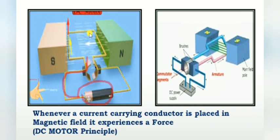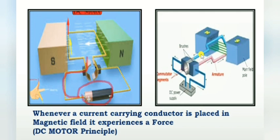The input is electrical energy and the output is mechanical energy — this is the DC motor operating principle. DC is applied, current flows, producing the main magnetic flux. The conductor carries DC current and the flux causes the conductor to rotate, because whenever a current-carrying conductor is placed in the influence of magnetic flux, it experiences a force. This is the DC motor principle. So this is electromagnetic induction.